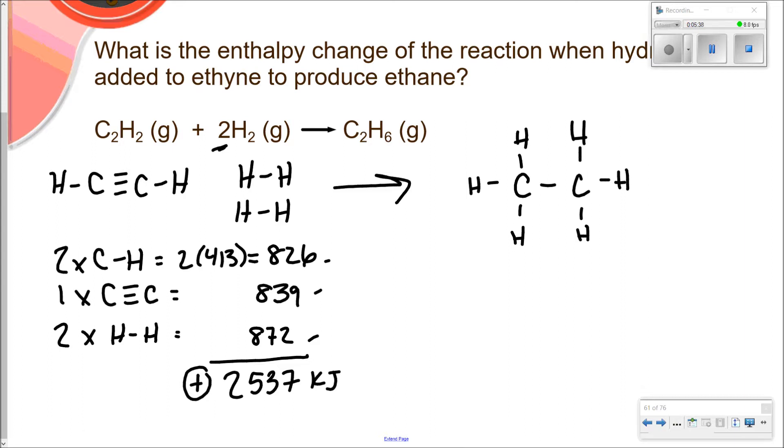On my product side, if I go over to the right, I've got one carbon single bond carbon, which is going to be 348. And I've got six carbon hydrogen, which is going to be 2478. And remember, these are both going to be negative because this side, when we're making bonds, it's exothermic. It's releasing all this energy. And you get negative 2826.